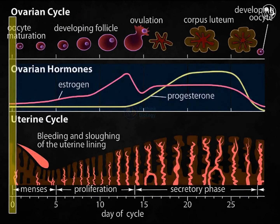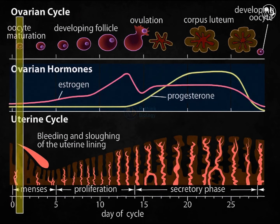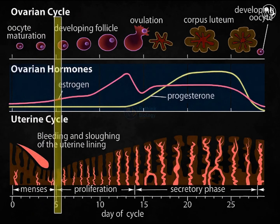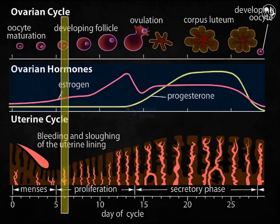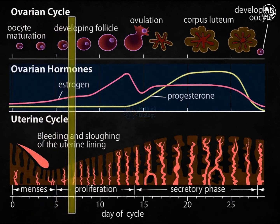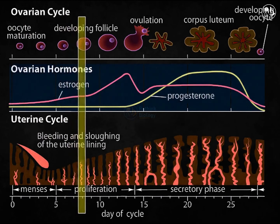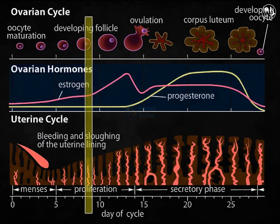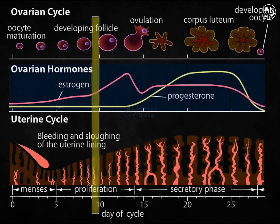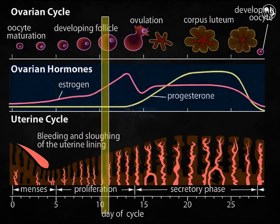The corpus luteum stops producing estrogen and progesterone as it degenerates. The ovarian and uterine cycles are in perfect synchronization. At different stages of the ovarian cycle, hormones generated by the ovary cause changes in the uterine lining. Early in the cycle, estrogen and progesterone levels are insufficient to maintain the uterine lining and menses begins. Around a week into the cycle, the growing follicle increases estrogen output, causing uterine lining cells to multiply and the lining to thicken.